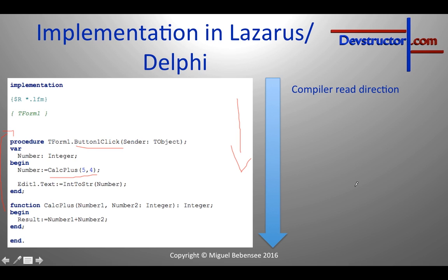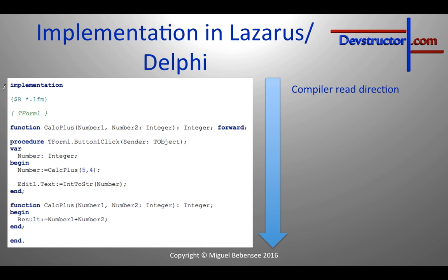Therefore you have to move the function before your procedure. Or you can use a forward declaration. To do a forward declaration, you write the header of your function inside the implementation area — in my case it's 'function calculate plus' with all the parameters and result type, followed by the keyword 'forward' and a semicolon. Now the compiler already knows the function name, the parameters needed, and the result type, so it can work with it without causing an error.